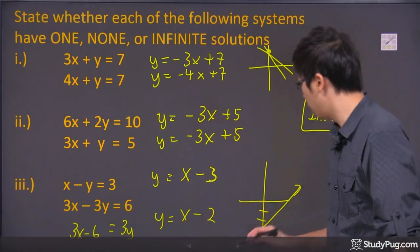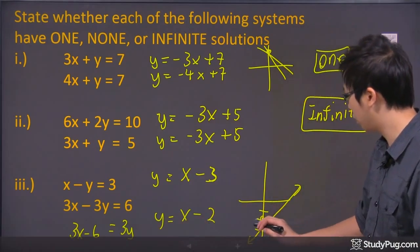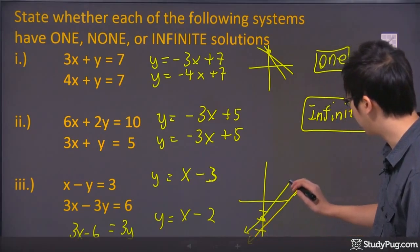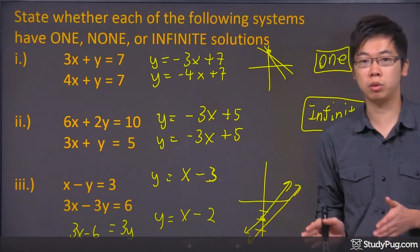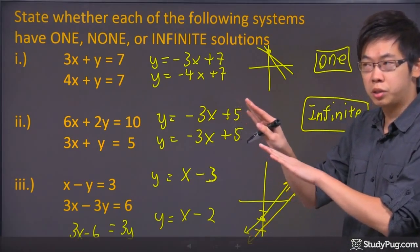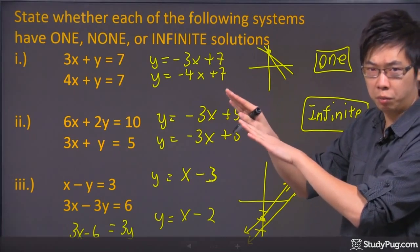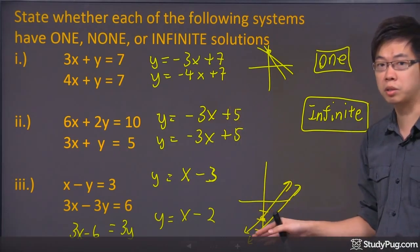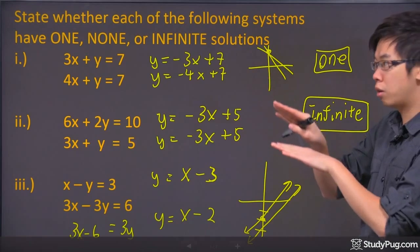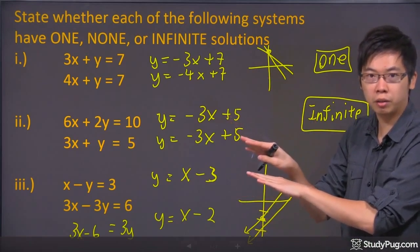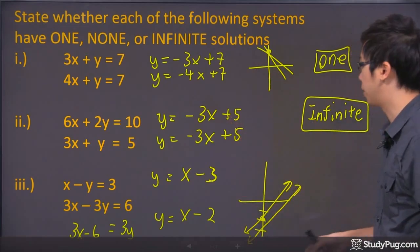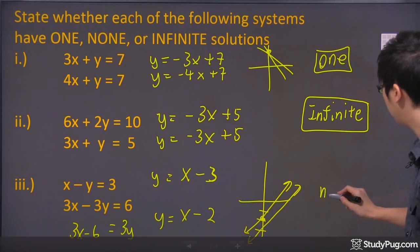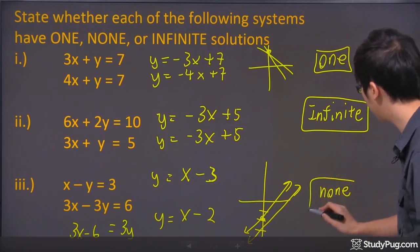But for the second equation, it happens at y equals negative 2, but with the same slope. So what happens is these two lines, they go up at the same angle, same slope, but they both start at a different place. So that means because they're going with each other parallel, they're never going to touch each other. So that's why the answer for this would be just no answers.